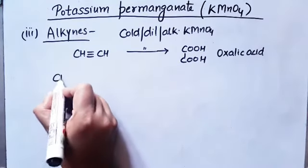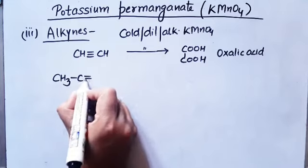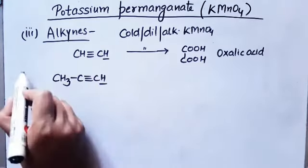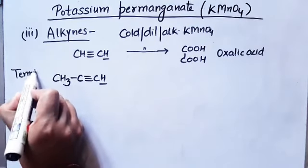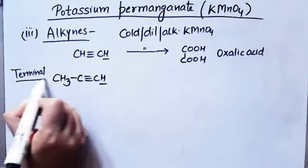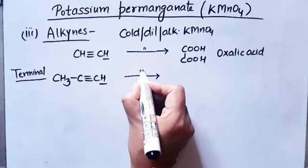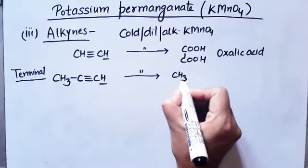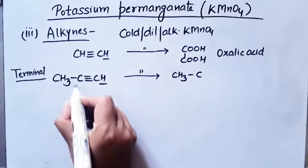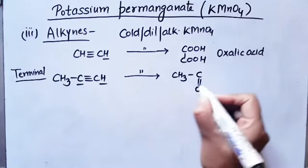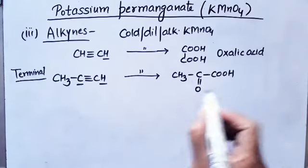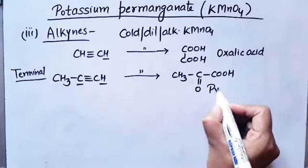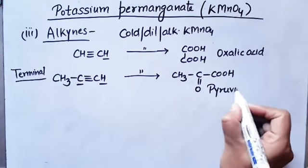For a terminal alkyne — where a hydrogen atom is present at the terminal end — when treated with cold dilute alkaline KMnO₄, the group without a terminal hydrogen changes to a keto group. So you will get CH₃-COO (the terminal end changes to acid), and you will get pyruvic acid.